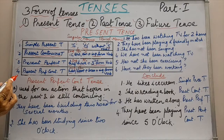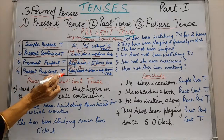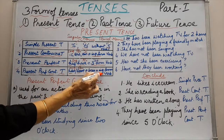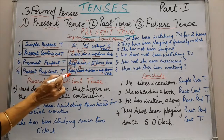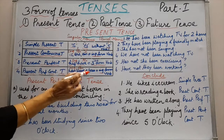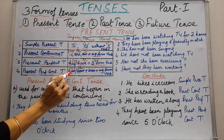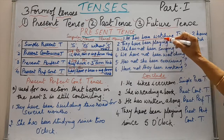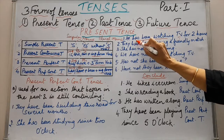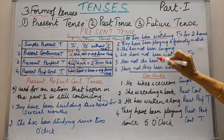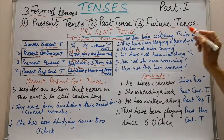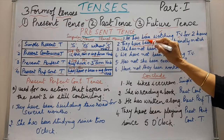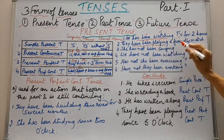The fourth form of present tense is present perfect continuous tense. In this tense, we use has or have plus been plus the ing form of verb. Has is used with singular nouns, have is used with plural nouns, been is used with both, and ing form of verb is also used with both. Examples: he has been watching TV for two hours — he is singular, so we use has plus been plus ing form of verb. They have been playing a friendly match — they is plural, so we use have plus been plus playing.